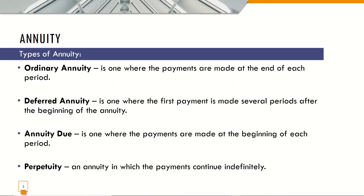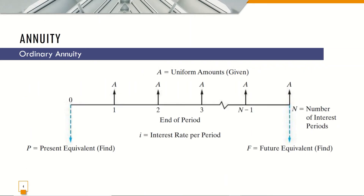We will discuss each of these four types one by one, starting with the ordinary annuity. This is the cash flow diagram of the ordinary annuity, where the first payment is made at the end of each period. For example, from the present value, the first payment is made after one year, then a uniform amount is given for two years, three years, and so on until the number of interest periods, up to the future equivalent amount using an interest rate per period.